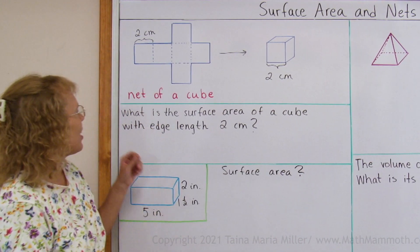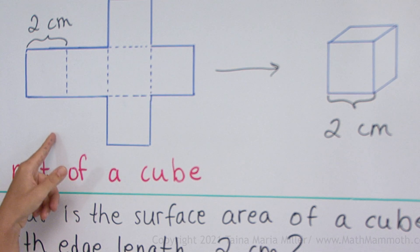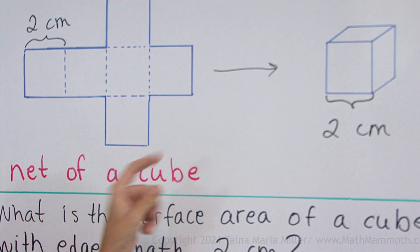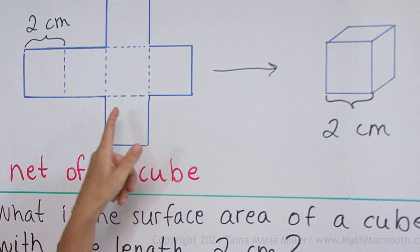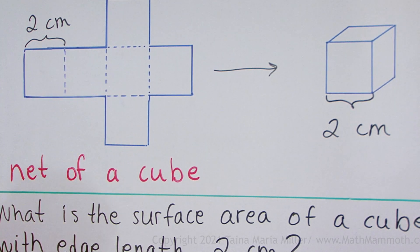Here I have the net of a cube. What it is, is if I drew this on paper and then I cut it out and folded it here, I would get a cube.